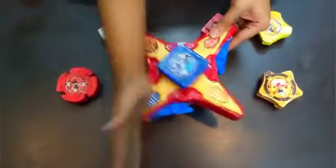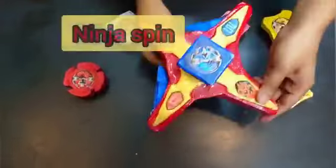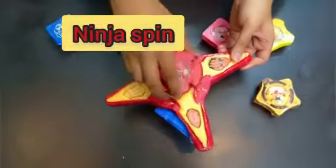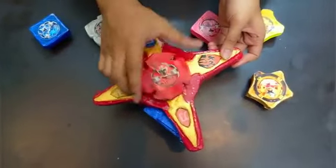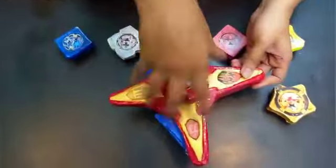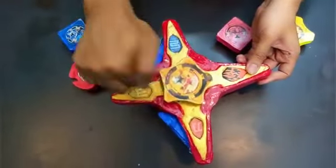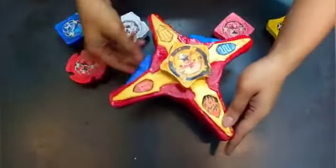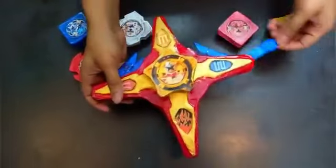And hence your ninja steel morpher is ready with 6 different ninja stars. By using these tricks, you can make different ninja stars. Depending upon the response to this video, I will be making ninja steel sword also with some different ninja stars.